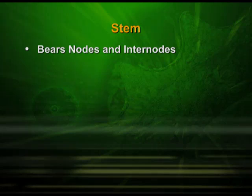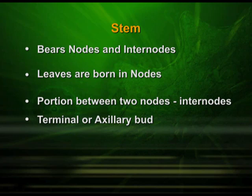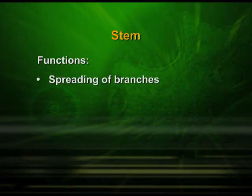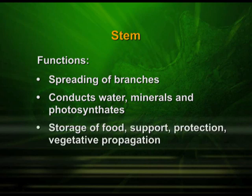Let us have a quick recap of the portions found in the stem. It bears nodes and internodes; leaves are borne in nodes, and the portion between two nodes is called the internode. There is presence of terminal and axillary buds. These are certain characteristics which differentiate it from the root system. The functions of the shoot: it helps in spreading branches, conducts water, minerals, as well as photosynthates, and is responsible for storage of food, support, protection, and vegetative propagation.